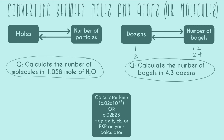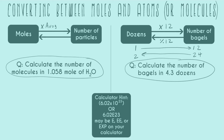When we think about our conversion going back and forth between dozens and numbers of bagels, going from dozens to bagels means we're multiplying by 12. Going in the reverse direction — if I had 24 bagels, how many dozens? — we're dividing by 12. Because a dozen is the same concept as a mole, we can do the same thing on the left-hand side: converting from moles to number of particles means multiplying by Avogadro's number, and going from particles to moles means dividing by Avogadro's number.